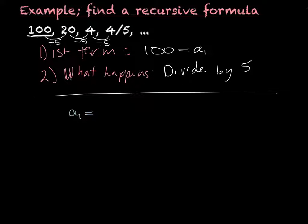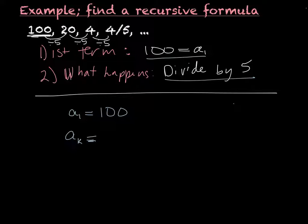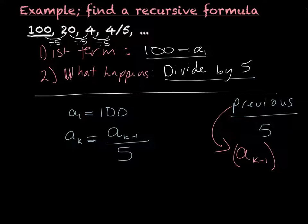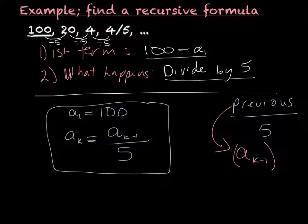A sub 1 equals 100 — always start with that. Then I want to find A sub K for any number in the sequence. I took my previous number and divided it by 5. The previous number is written as A sub K minus 1, so the formula is: A sub K equals A sub K minus 1 divided by 5. That is your recursive formula.